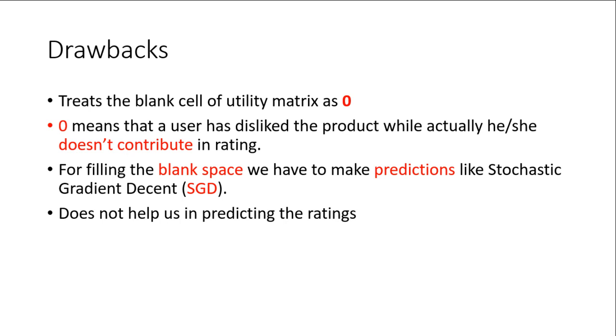Here are some drawbacks of cosine similarity. Cosine similarity treats the blank cell of utility matrix as zero. Zero means that a user has disliked the product or item while actually he or she doesn't contribute in ratings.